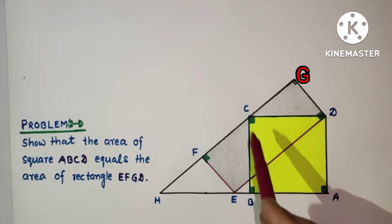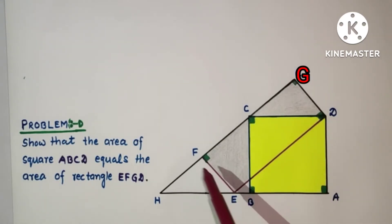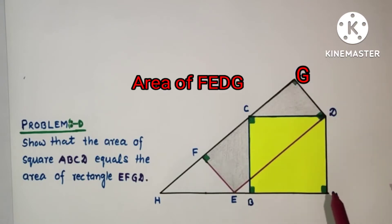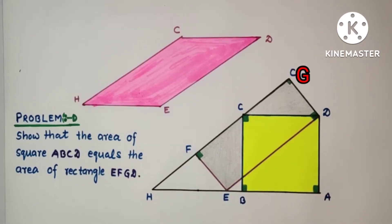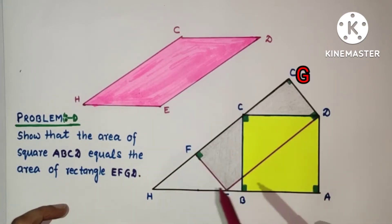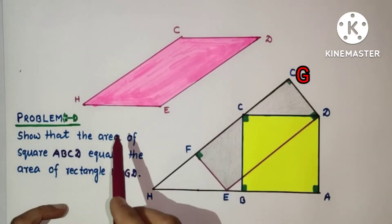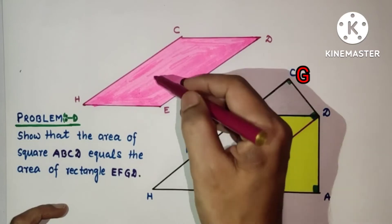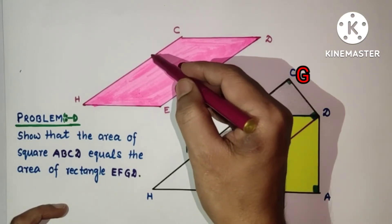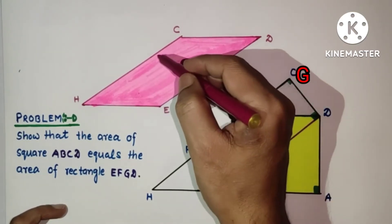To prove that the area of this square is equal to the area of rectangle FEDC, look at parallelogram HEDC. This parallelogram has an important role in proving these two areas equal. We can find the area of this parallelogram using the formula base times height — if we take one side as the base, we drop a perpendicular to find the height.